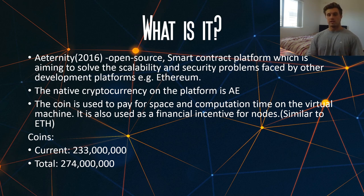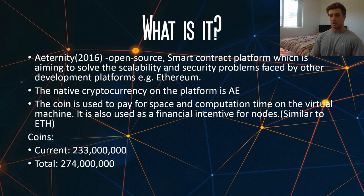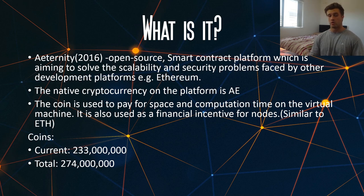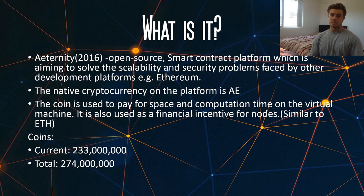For the cryptocurrency, we currently have 233 million coins in circulation with a total of 274 million coins. This isn't a tiny amount but it's not huge either if you compare it to some other coins like Ripple.